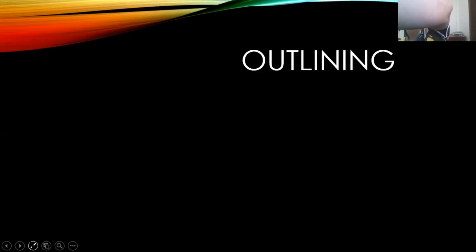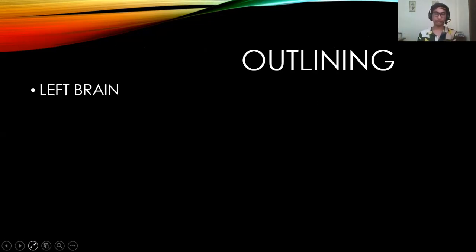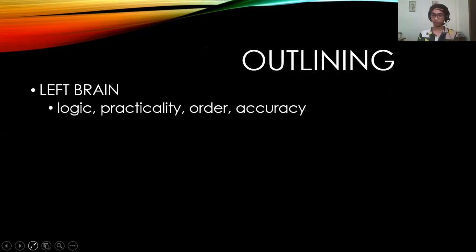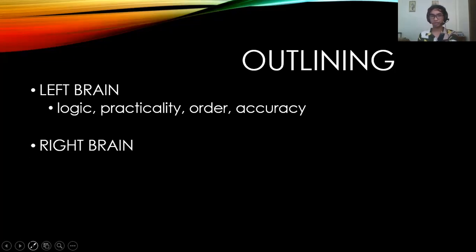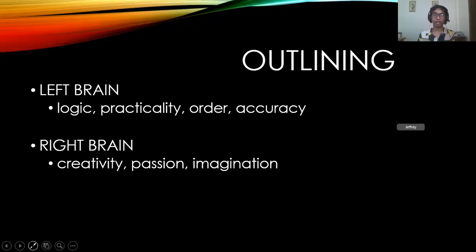Let's proceed to the outlining part. For our left brain, we normally have logic, practicality, order, and accuracy — that is mostly the function of the left portion of our brain. For the right brain, it is more on creativity, passion, and imagination. That's the difference between the left and right parts of our brain.